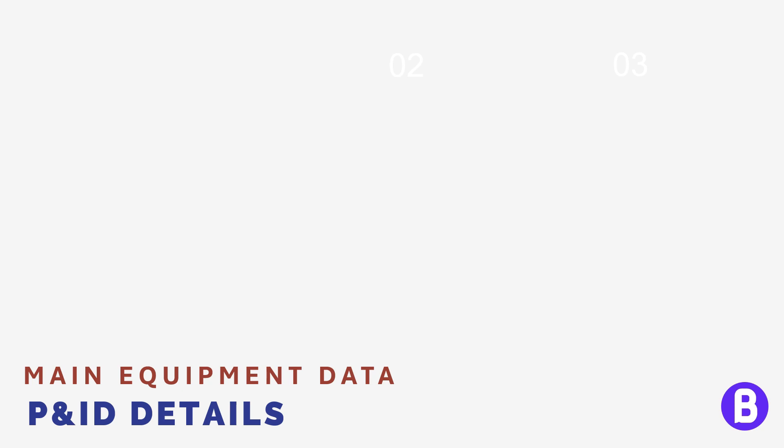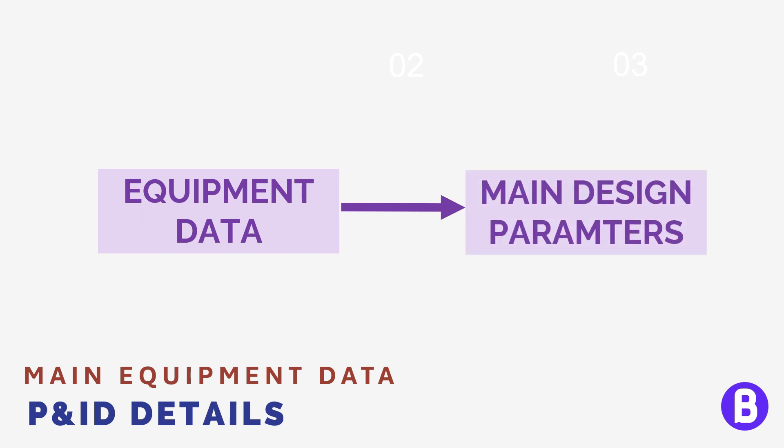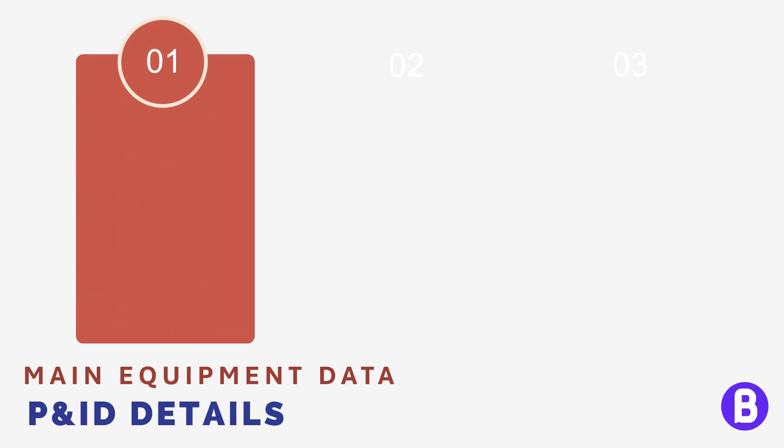Now let's talk more about the data shown on each piece of equipment in the P&ID. Any P&ID shows the main design parameters of the equipment in question. The design parameters are either related to the design pressure and temperature, or to the dimensions and performance parameters. The parameters to be shown differ depending on the company or project standard. However, there are common parameters to be shown, such as the design conditions for equipment — in the case of static equipment, that means the design pressure and design temperature.